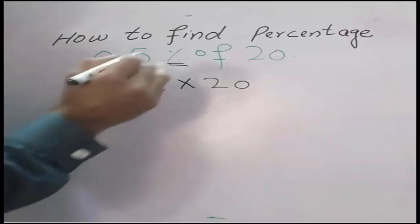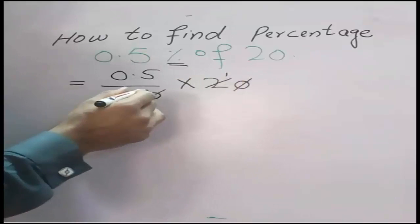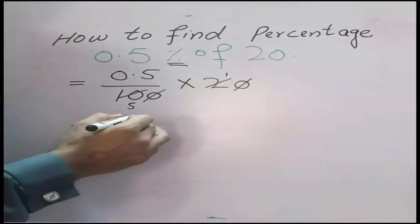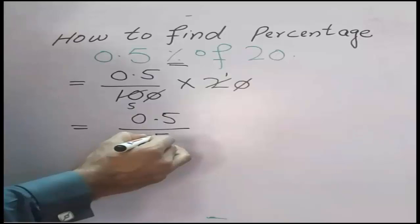After that, this will be cut off with this, and 2 times 1 is 2, 2 times 5 is 10. After that, 0.5 over 5.